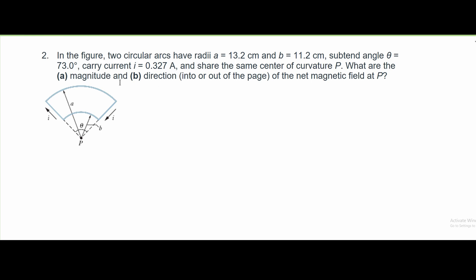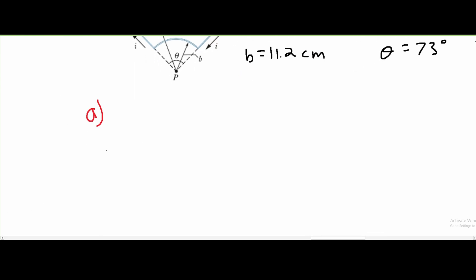What are the magnitude of the net magnetic field at P? To find the magnitude, we need to use the formula. The formula for magnitude for two circular arcs is the absolute value of B equals μ₀ times I divided by 4πR.